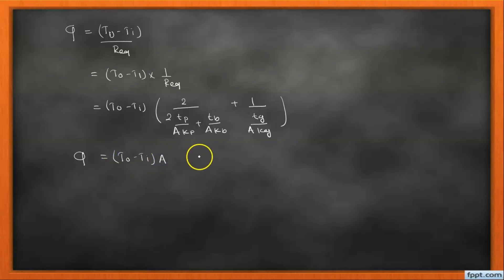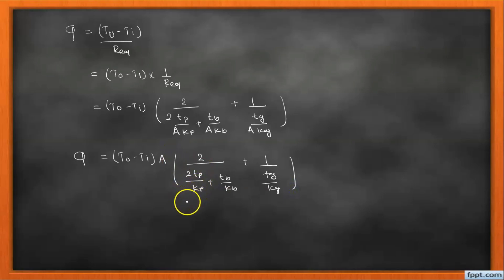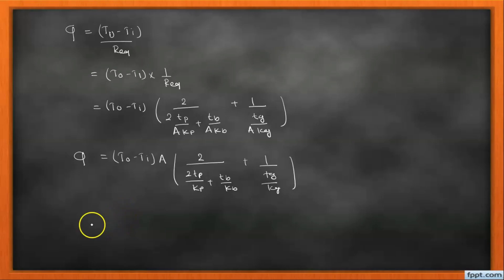Taking area A as common, the final expression becomes: q = (To - Ti) · A · [2/(2tp/kp + tb/kb) + 1/(tg·kg)]. In this way we can solve this question and get three marks. Thank you students for watching this video.